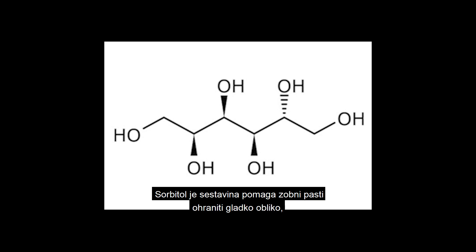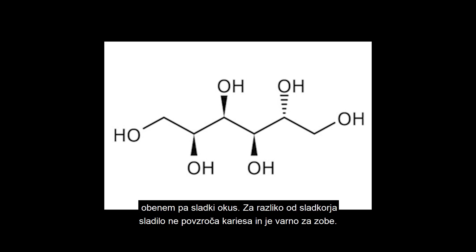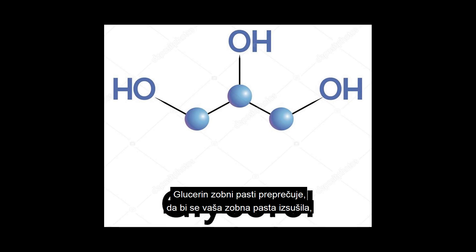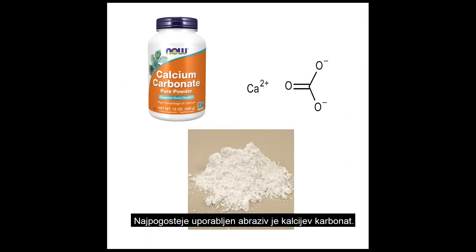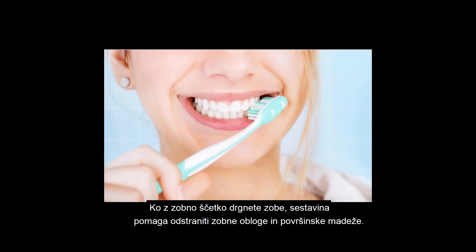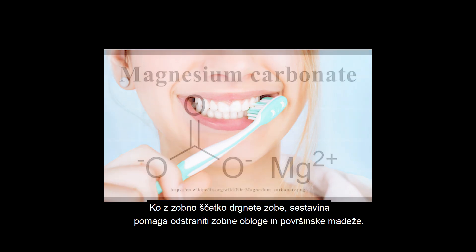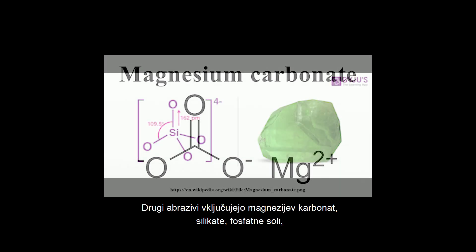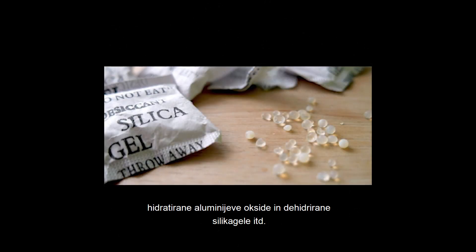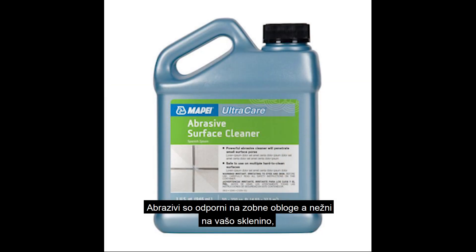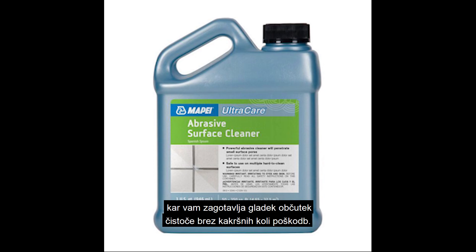Sorbitol is an ingredient that helps the toothpaste to keep its smooth shape and also the sweet taste. Unlike sugar, this sweetener doesn't cause caries and it is safe for teeth. Glycerol is an ingredient that prevents the toothpaste from drying out and also makes sure that its texture always stays smooth. The most commonly used abrasive is calcium carbonate. When you brush your teeth, the ingredient helps to remove dental plaque and surface stains. Other abrasives include magnesium carbonate, silicates, phosphate salts, hydrated aluminum oxide, dehydrated silica gels, and others. Abrasives are resistant to dental plaque and are gentle on your enamel, which ensures a smooth feeling of cleanliness without any injuries.